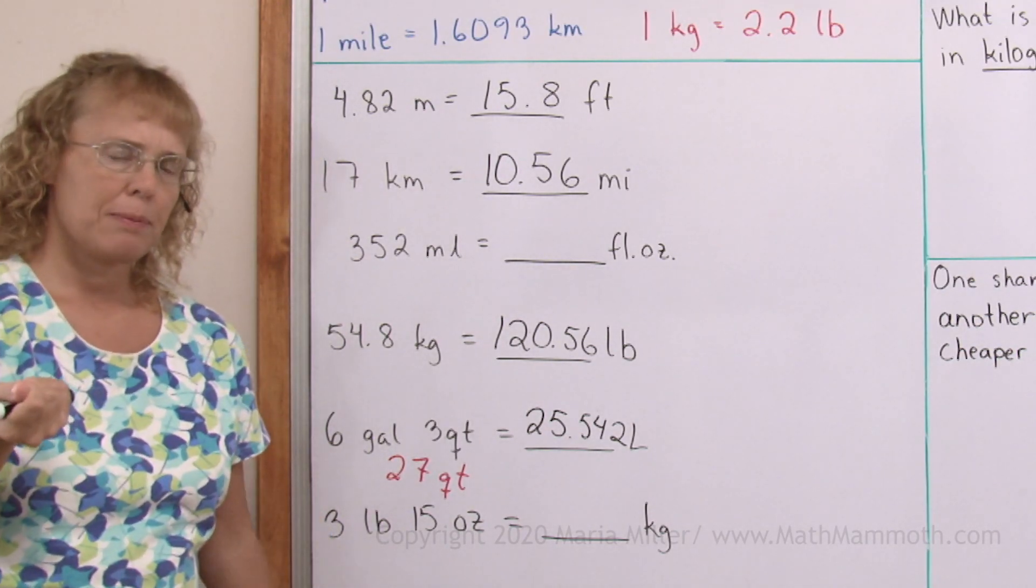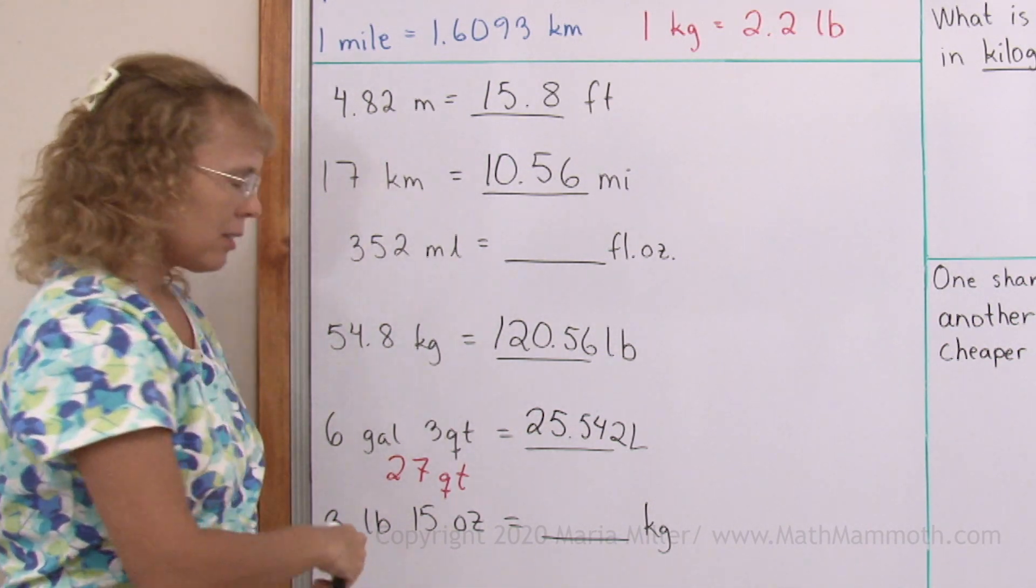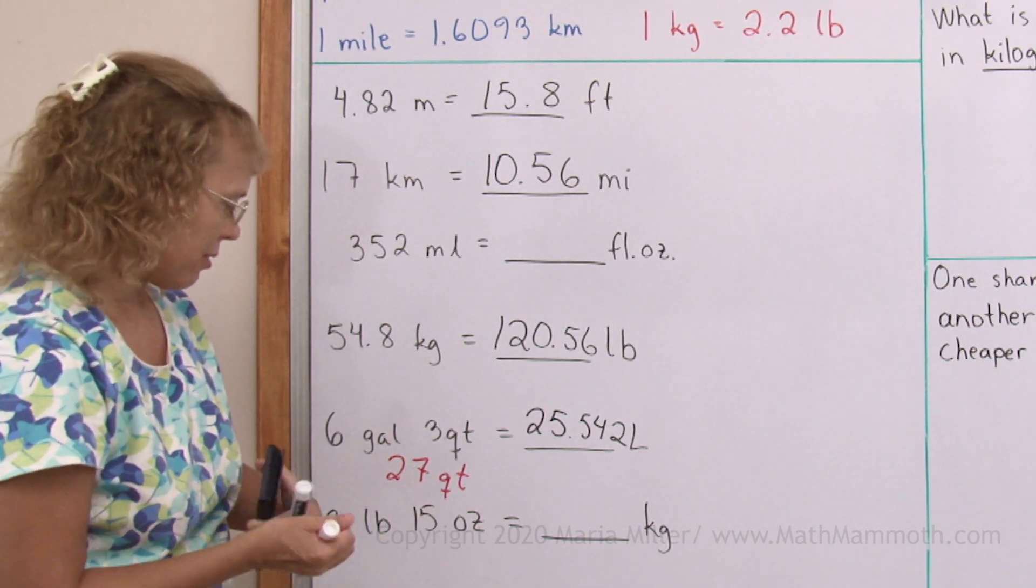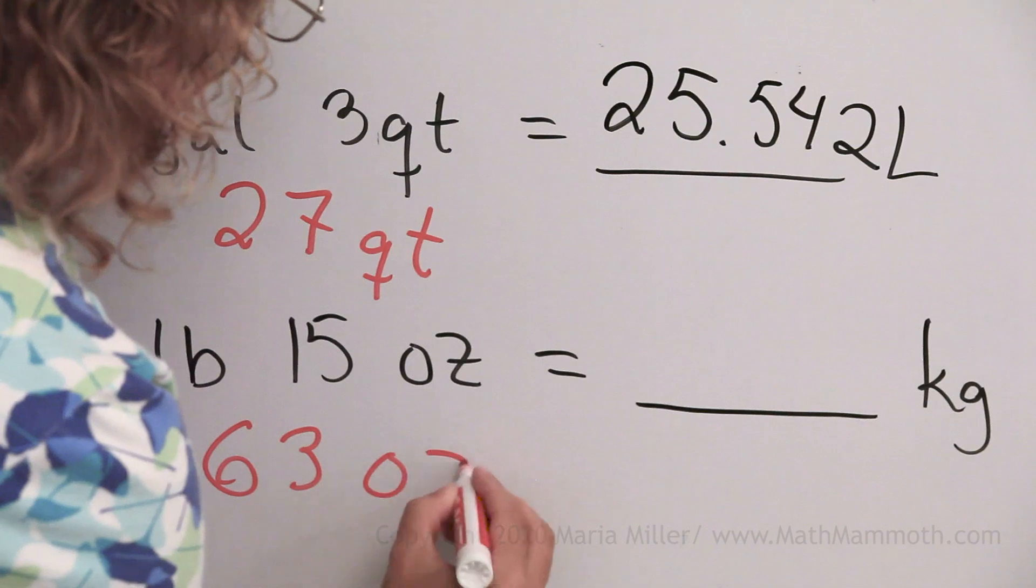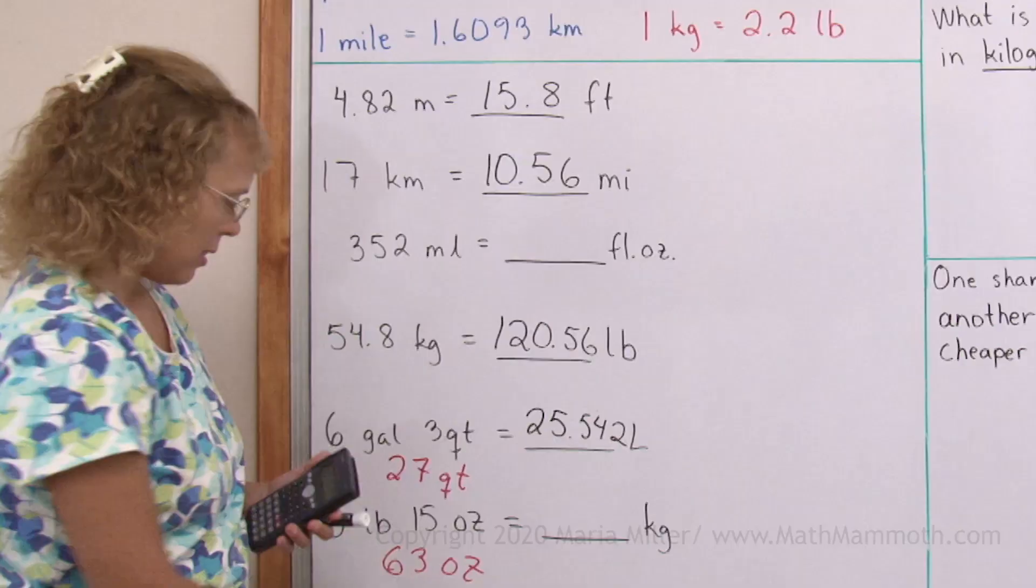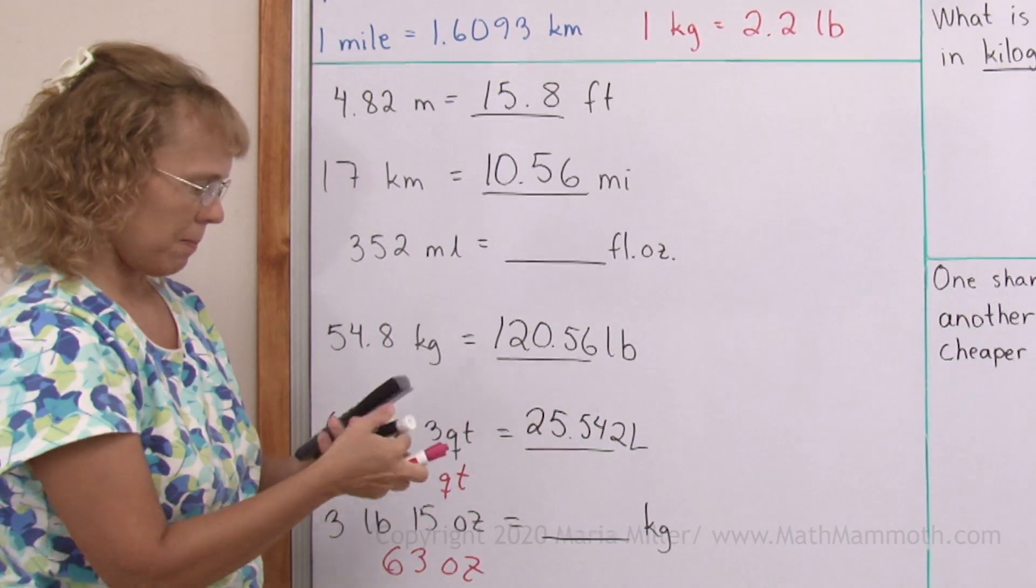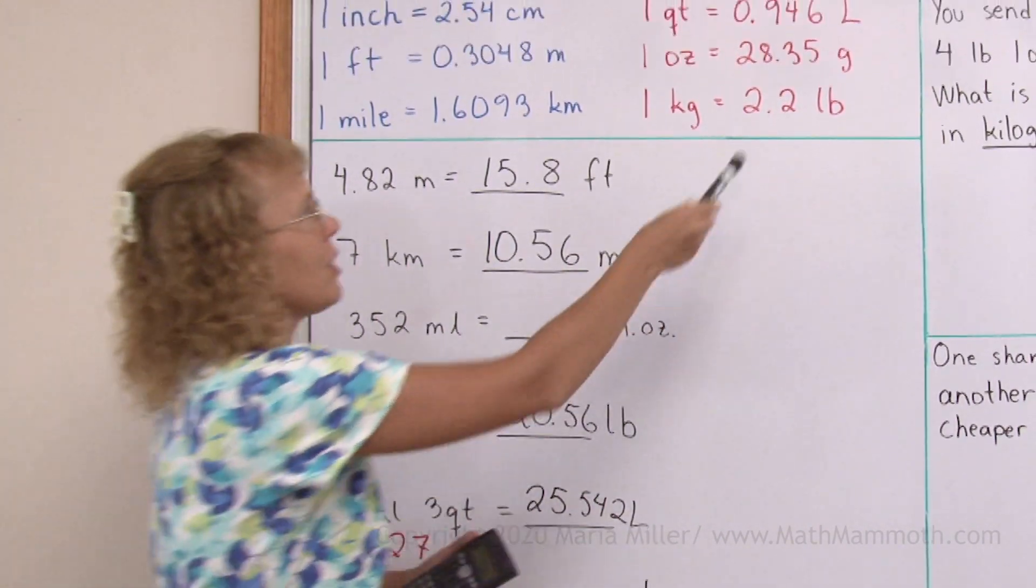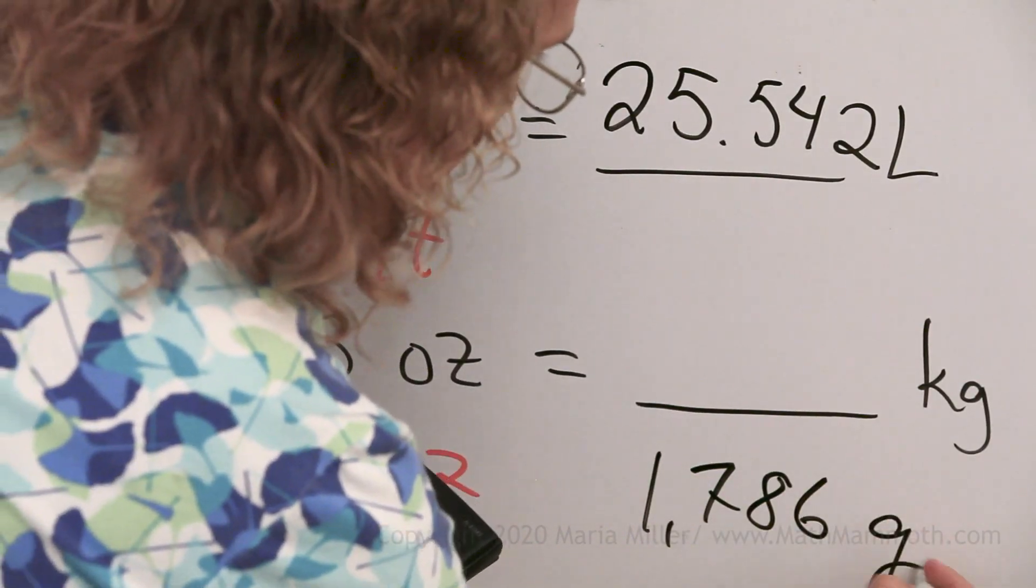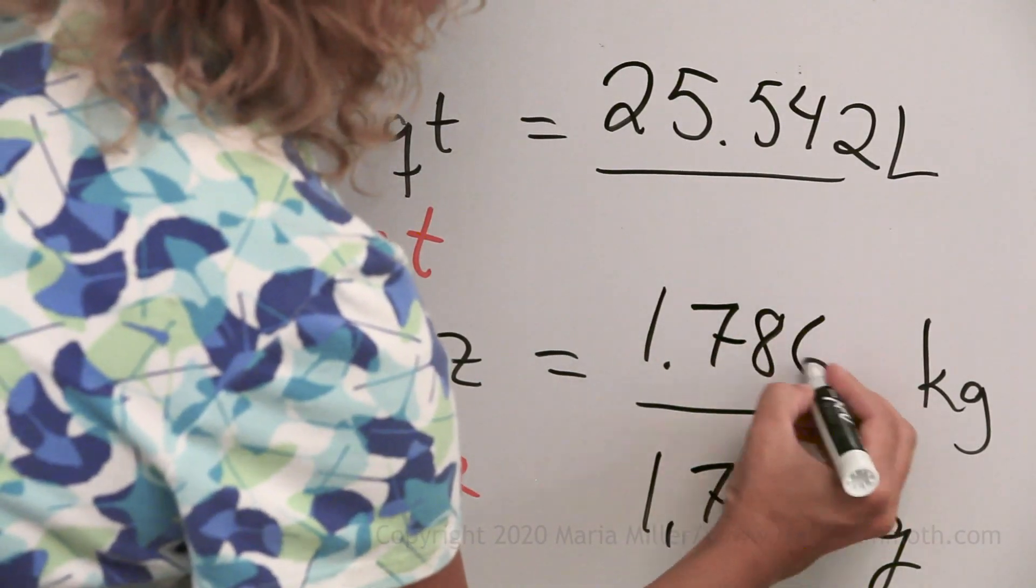Three pounds, how many ounces is it? One pound, 16 ounces, right? Three pounds is 3 times 16, that's 48. Plus 15, so we will get 63 ounces. And now, one ounce is 28.35 grams. So 63 ounces, 63 times that much. My answer is in grams, because this is here, grams. I'm gonna write it here. 1786 grams. As kilograms, it is 1.786 kilograms.